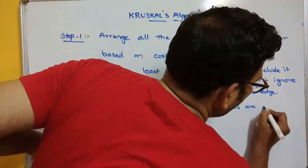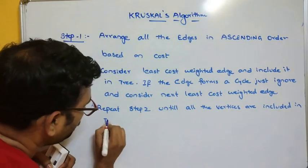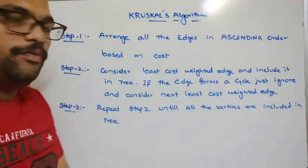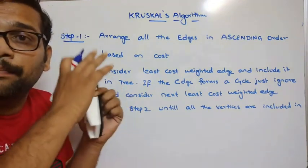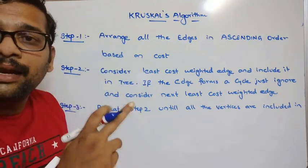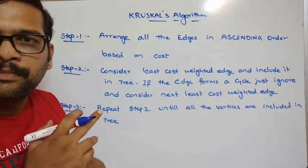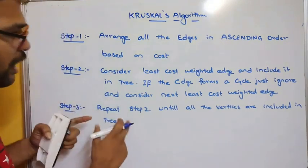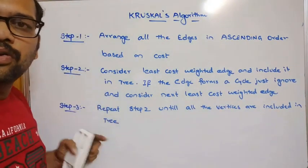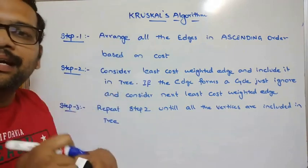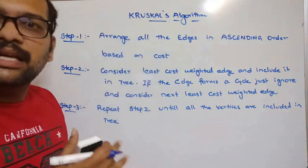Step 3: Repeat step 2 until all the vertices are included in the tree. If the graph has n vertices, the spanning tree should have n vertices with n minus 1 edges. By following these steps, we can find the minimum cost spanning tree using Kruskal's algorithm.